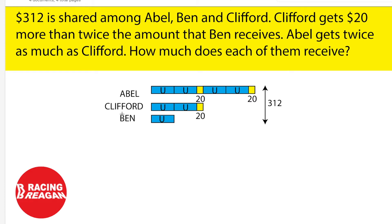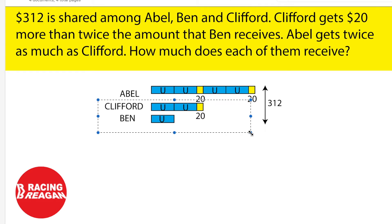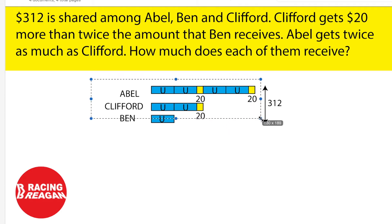First you have to draw a model. So as it says, Clifford gets $20 more than twice the amount that Ben receives — that means you draw Clifford with 2 units and 20, and Ben with 1 unit. It next says that Abel gets twice as much as Clifford, so Abel would equal 2 units plus 20, plus 2 units plus 20.